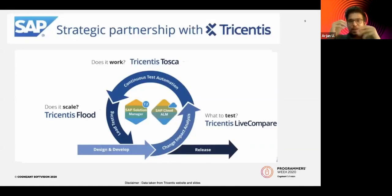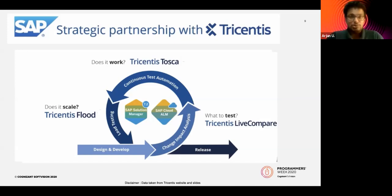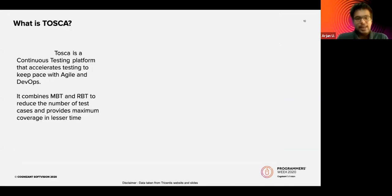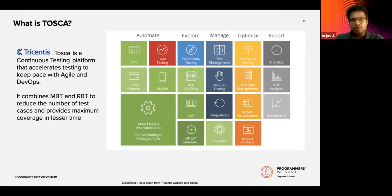The answers from the Tricentis-SAP partnership are: 'What to test' is addressed by Tricentis LiveCompare — an AI-driven impact analysis tool. 'Does it work' — functional testing — is addressed by Tricentis Tosca. 'Does it scale' — performance testing — is addressed by Tricentis Flood. We'll concentrate most on Tosca for functional testing. Tosca is a continuous testing platform using model-based testing (MBT) and risk-based testing (RBT) to reduce test cases while maximizing coverage.